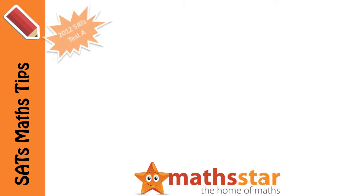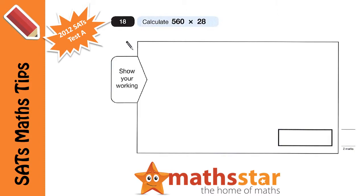This question comes from the 2012 SATs Maths Test A. It asks us to calculate 560 times 28, so we need to do long multiplication.